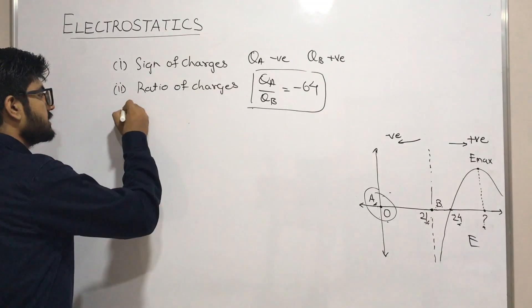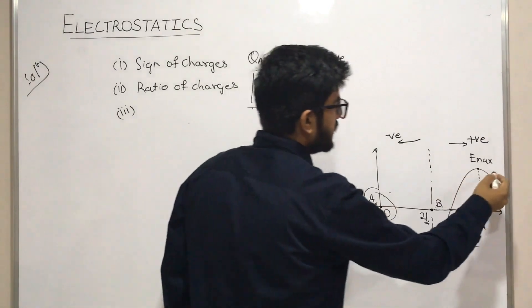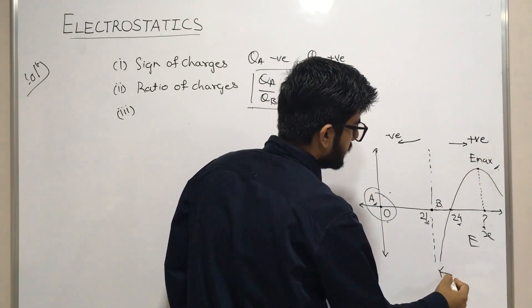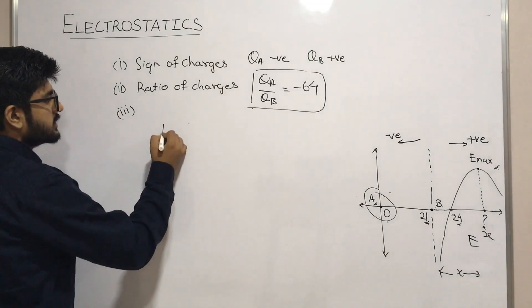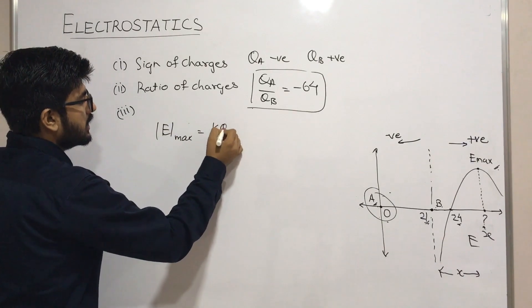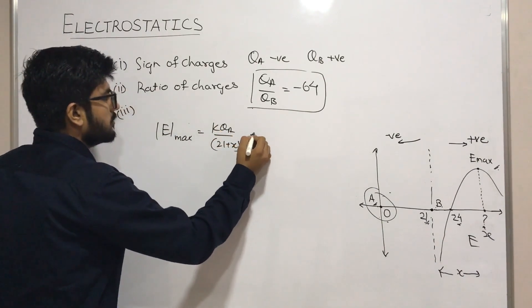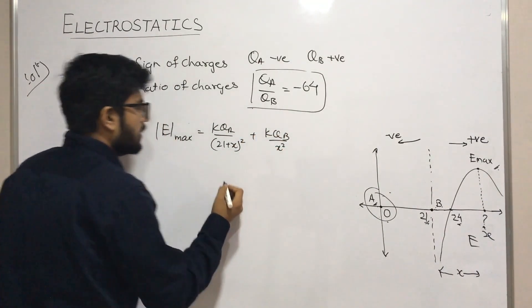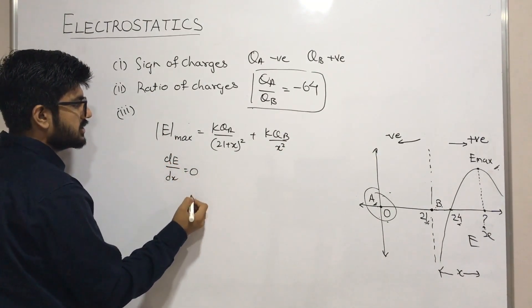Now let's take the third question: what is the x-coordinate where the electric field is maximum? We can write that qb is at x distance. So the electric field maximum expression is: E = k·qa upon (21+x)² plus k·qb upon x². To find the maximum, we set dE/dx equal to zero.